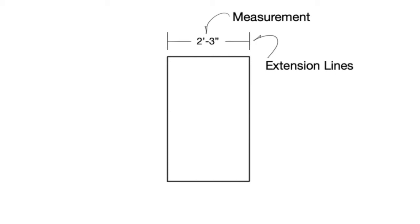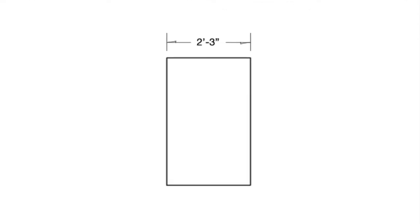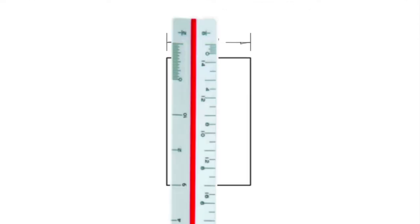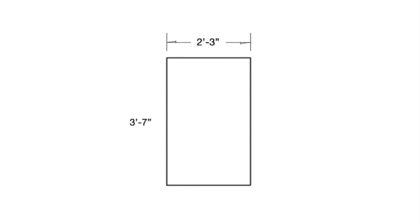Next is a dimension line. The dimension line is a thin line broken in the middle to allow the placement of the dimension or the measurement. Where the dimension lines and the extension lines meet, you put an arrow, a dash, or a dot. In this case, I put half arrows. Now that we've measured the width, let's go ahead and measure the height. According to the measurements on my scale ruler, this is three feet, seven inches. I'll add my extension lines, my dimension lines, and I'll finish it off with the arrows.